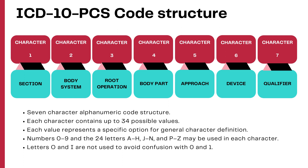The first character identifies the section, which is the broader section identifying procedures to a specific category. The second character identifies the body system where the procedure is being performed. The third character identifies the root operation or the objective of the procedure. The fourth character identifies the specific body part on which the procedure is performed. The fifth character identifies the approach taken to complete the procedure. The sixth character identifies if any device is left in place and what sort of device it is.